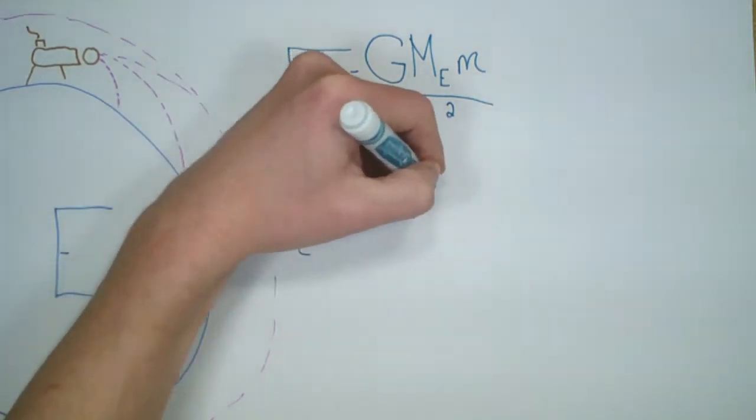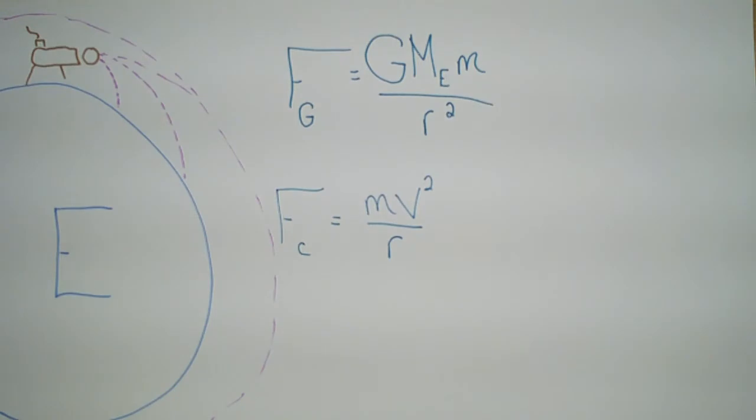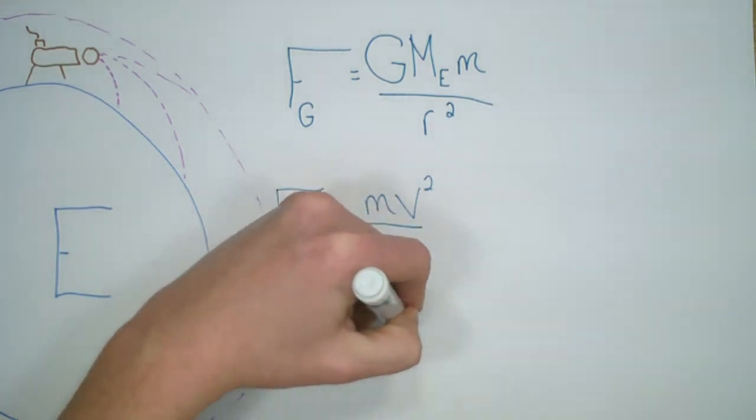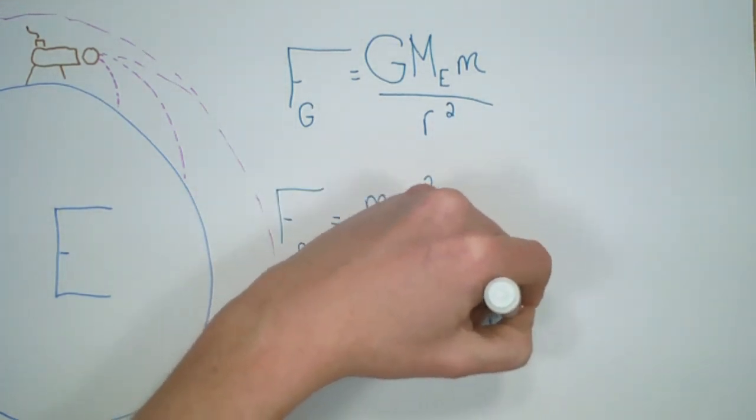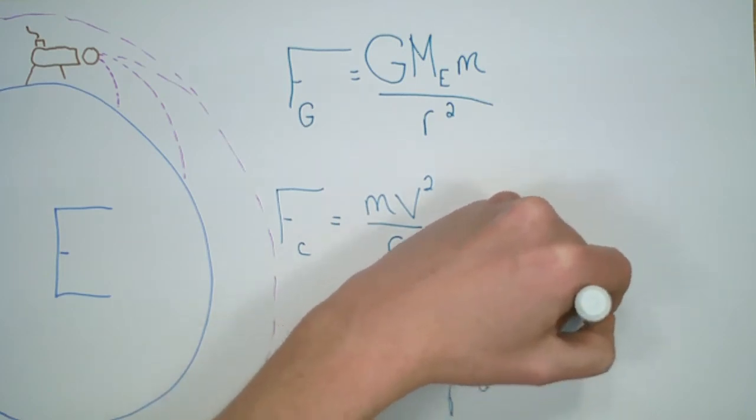and assuming uniform circular motion, which tells us that the mass of the object multiplied by its speed squared over R. If we consider that these two are going to be equal to each other, and that it is the force of gravity causing the circular motion,